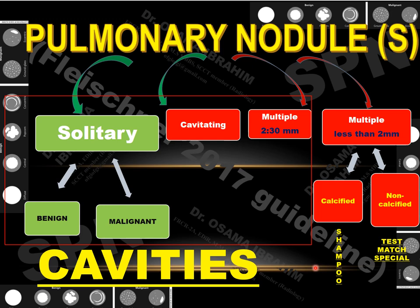Calcified causes of multiple pulmonary nodules less than 2 mm can be remembered by the mnemonic SHAMPOO: Silicosis, Hyperparathyroidism/Histoplasmosis, Alveolar microlithiasis, Metastasis or Mitral stenosis, Previous chickenpox exposure. Non-calcified multiple pulmonary nodules less than 2 mm can be remembered by TEST MATCH SPECIALS: TB, Metastasis, Silicosis or Sarcoidosis. A previous presentation on multiple pulmonary nodules with calcification is linked in the description.